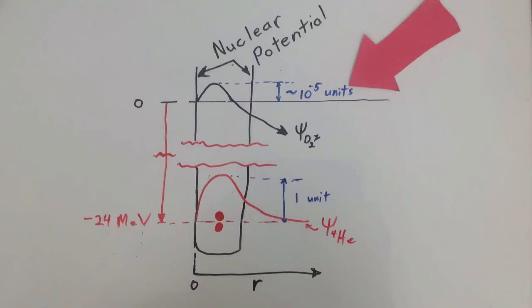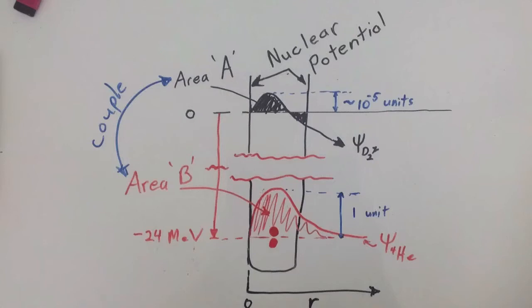This is a very small part of the whole intermediate electron wave function. We color in the area under the wave function curves and label capital A for the D2 star and capital B for the helium-4 wave function. We will need to show how these are coupled.